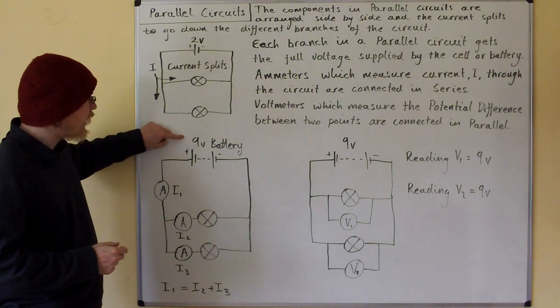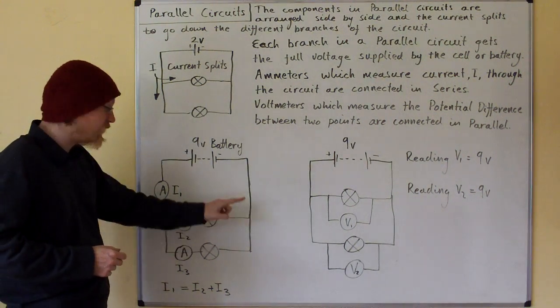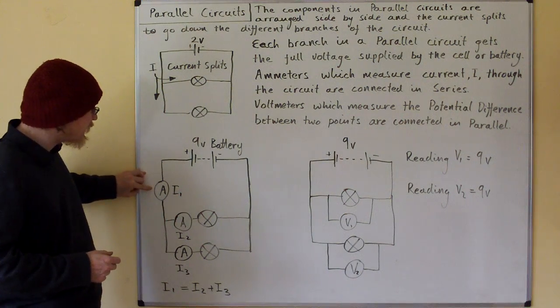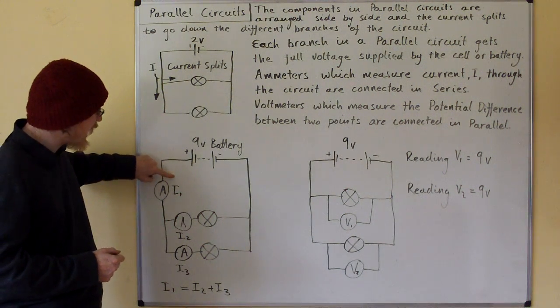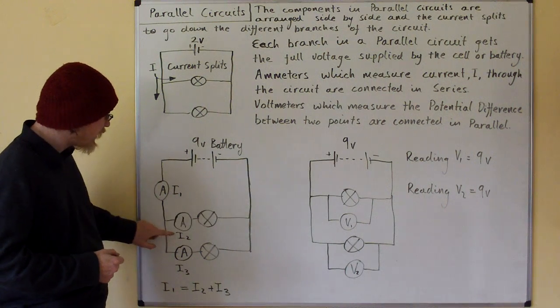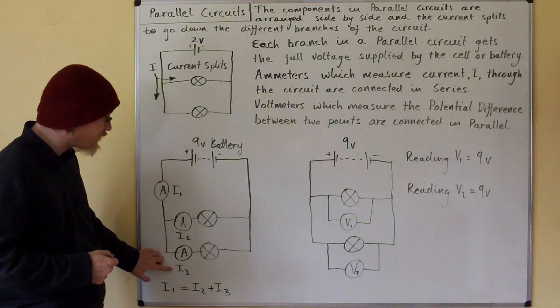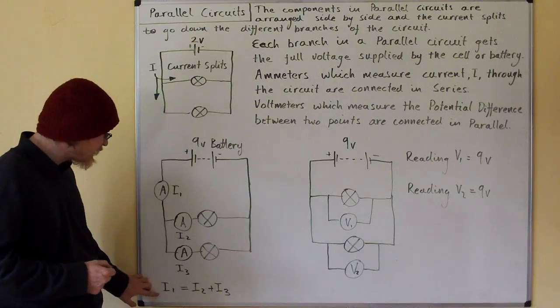Here we have a 9 volt battery putting current through this circuit. We put an ammeter in the main circuit to measure current I1, then an ammeter in the first branch to measure I2, and an ammeter in the third branch to measure I3.